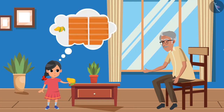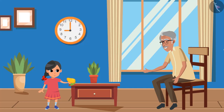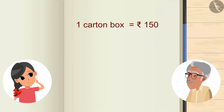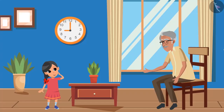Grandpa remembers the details. If the price of 1 carton box is 150 rupees, then the price of 10 carton boxes will be 150 multiplied by 10, which gives 1500 rupees. Gudi correctly calculates this, and grandpa confirms. Gudi then assumes their total expenditure is 1500 rupees.